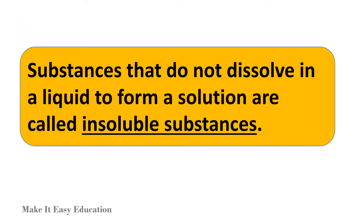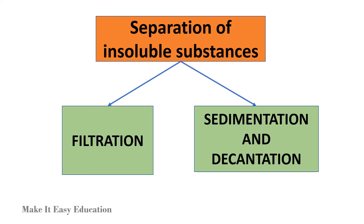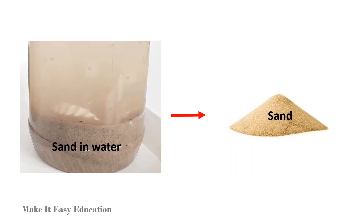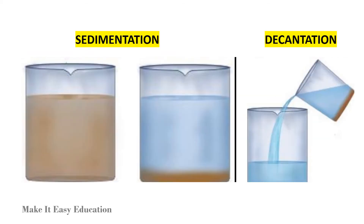Substances that do not dissolve in a liquid to form a solution are called insoluble substances. Sand and chalk are insoluble in water. Insoluble substances can be separated by the process of filtration, and sedimentation and decantation. For example, sand can be removed from water by filtration, and sedimentation and decantation.